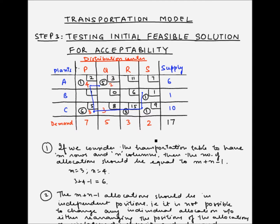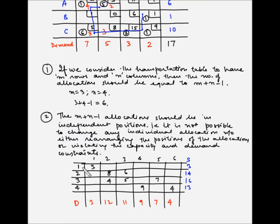Now let's consider an example where allocations are not in independent positions. With four sources of supply and six destinations, starting from cell 23, we can move to cell 22, then to 232, then to 233, and back to 23. Since we were able to return to the original cell without reversing any lines, this is a case where allocations are not in independent positions — a closed loop is formed.